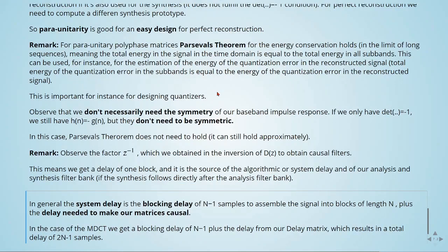Observe that we don't necessarily need the symmetry of our baseband impulse response. If we only have the determinant condition that the determinant is equal to minus 1, we still have h of n is equal to minus g of n, but they don't need to be symmetric. In this case, Parseval's theorem does not need to hold, but it can still hold approximately.